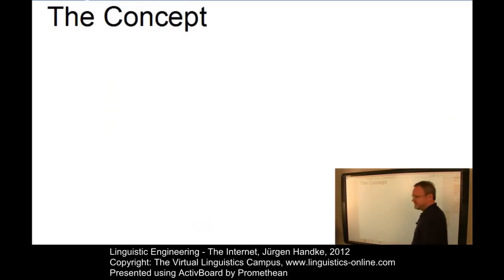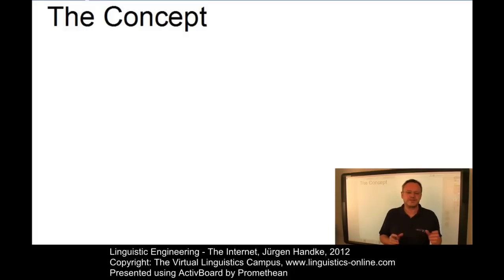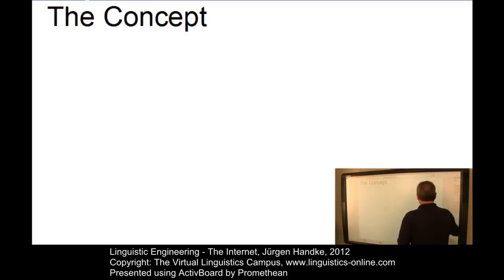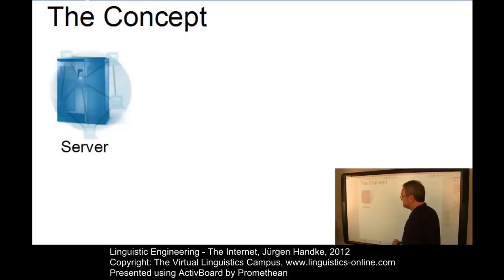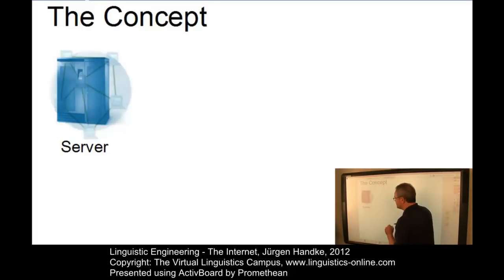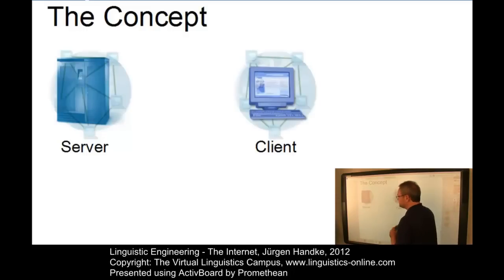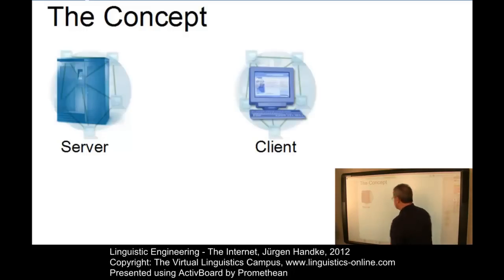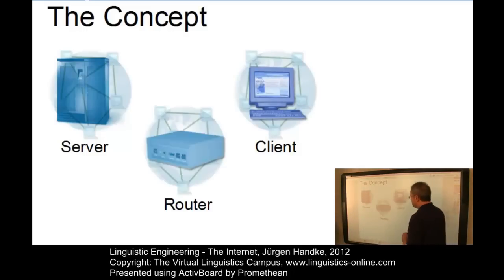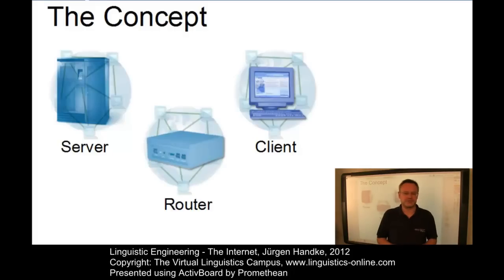The Internet resides on three types of machines and the software installed on them. There are servers, machines to be contacted by others. There are clients, machines that connect to servers. And there are routers, the so-called pathfinder machines.